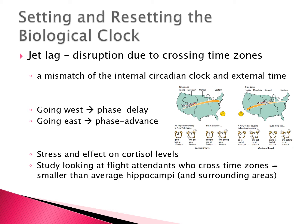When talking about setting and resetting the biological clock, jet lag is a good example. When we change time zones there is a mismatch between our internal circadian clock and the external time in the world. Going east is much more difficult than going west — it causes what's called a phase advance. If you sleep from 10 p.m. to 6 a.m. and travel from the west coast to the east coast, you're now feeling like you have to be asleep by 7 p.m. and get up at 3 a.m., and we all know how hard that is.